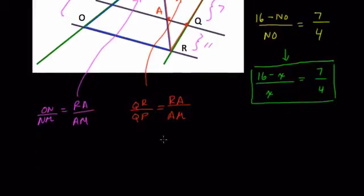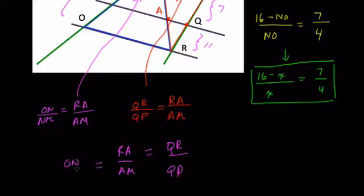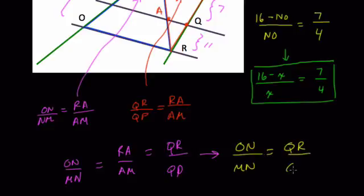But then what happens is, we're going to rearrange these two. So QR over QP equals RA over AM. And then here, notice that ON over NM also equals RA over AM. Let's switch the letters instead of NM. I'll write it as MN. Same segment. Since they both equal RA over AM, they must then equal each other.